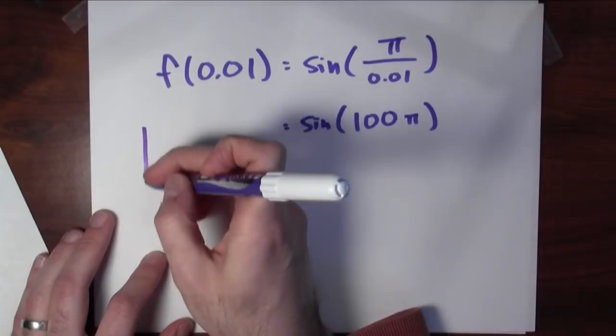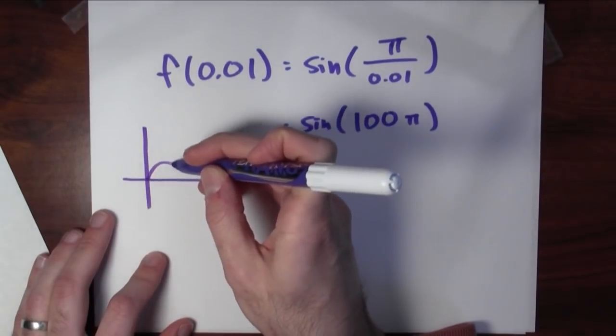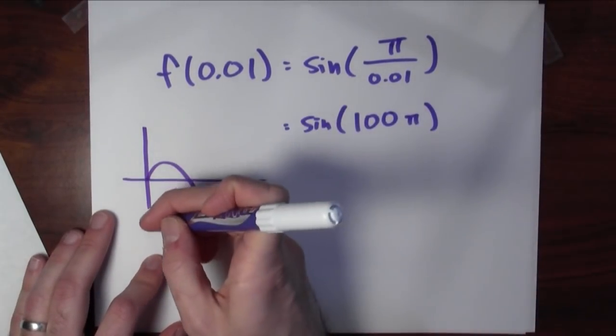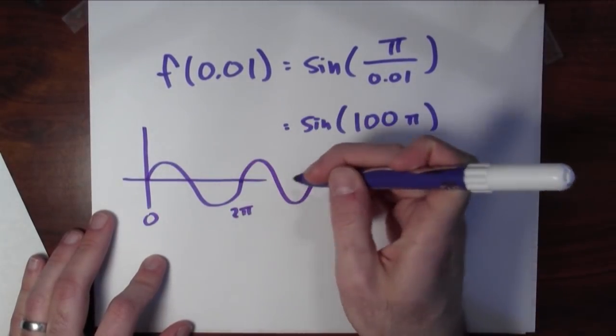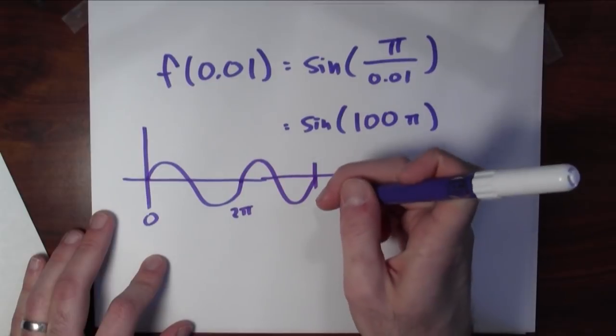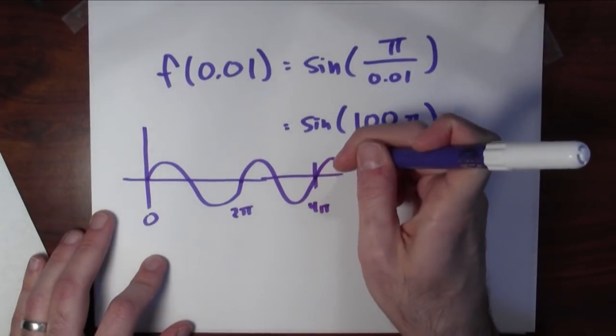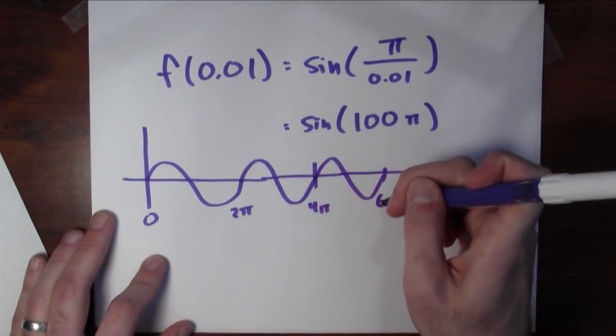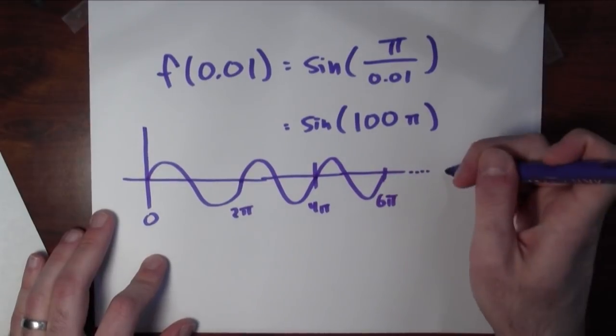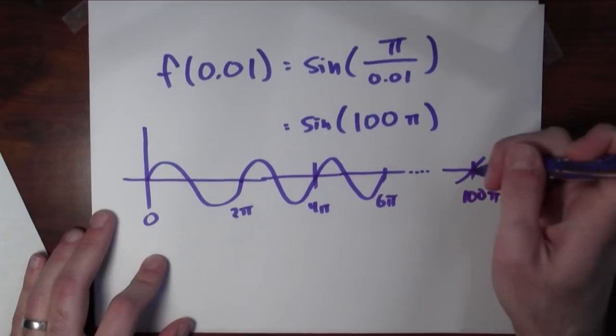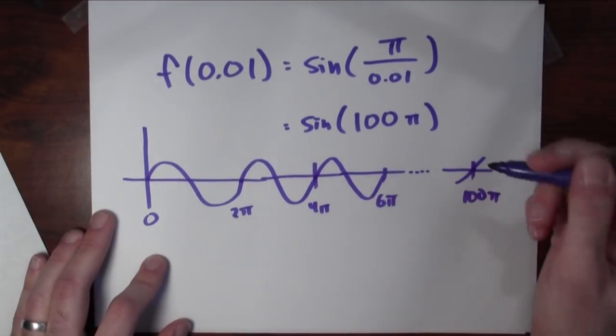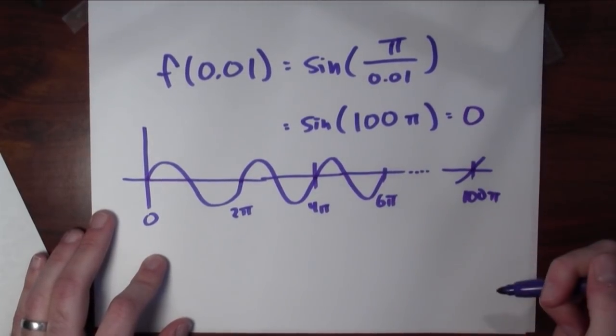What's sine of 100 pi? Well, think back to what the graph of sine looks like. Here's a graph of sine. 0 to 2 pi. If I do it again, here it is at 4 pi. And I do it again. Here it is at 6 pi. And I'm going to keep on going. And eventually, I'm going to get to 100 pi. And at that point, sine really is going to be equal to 0.